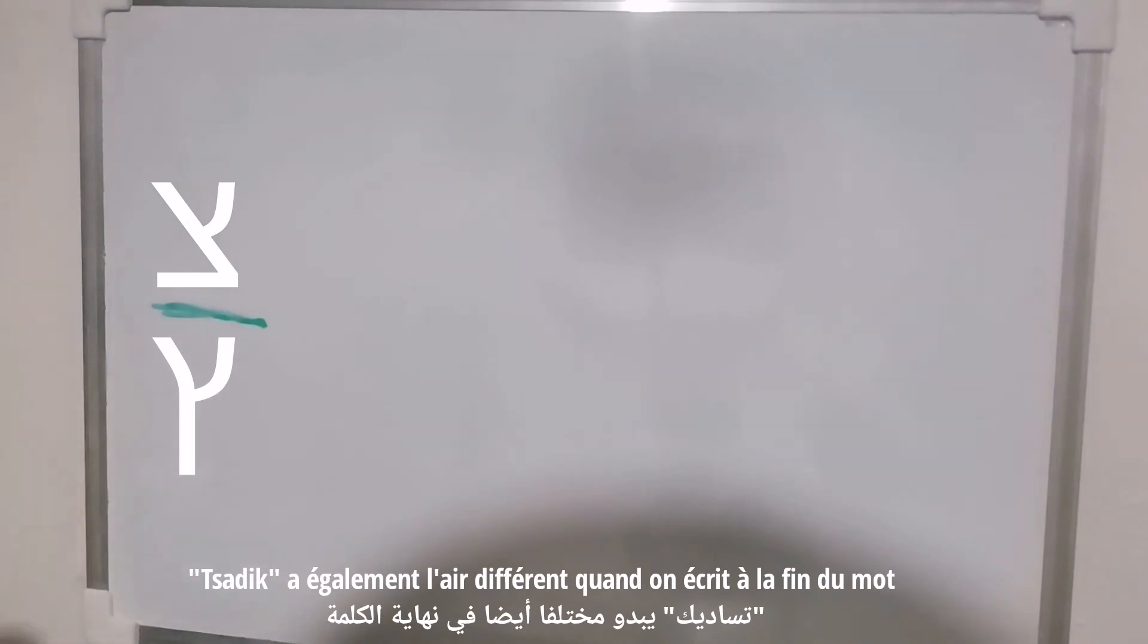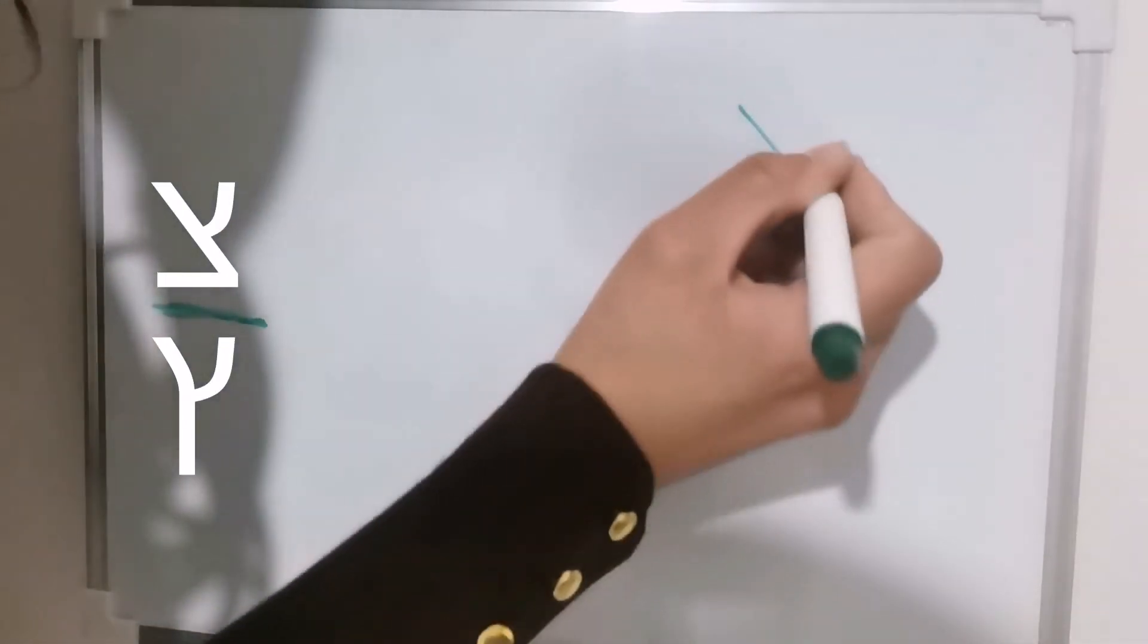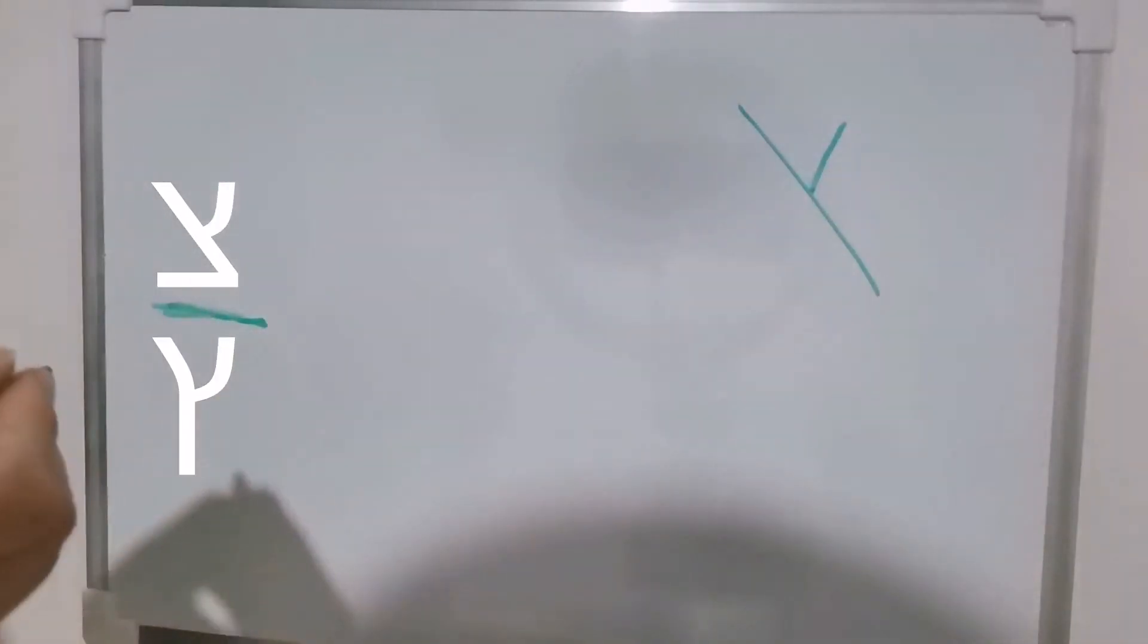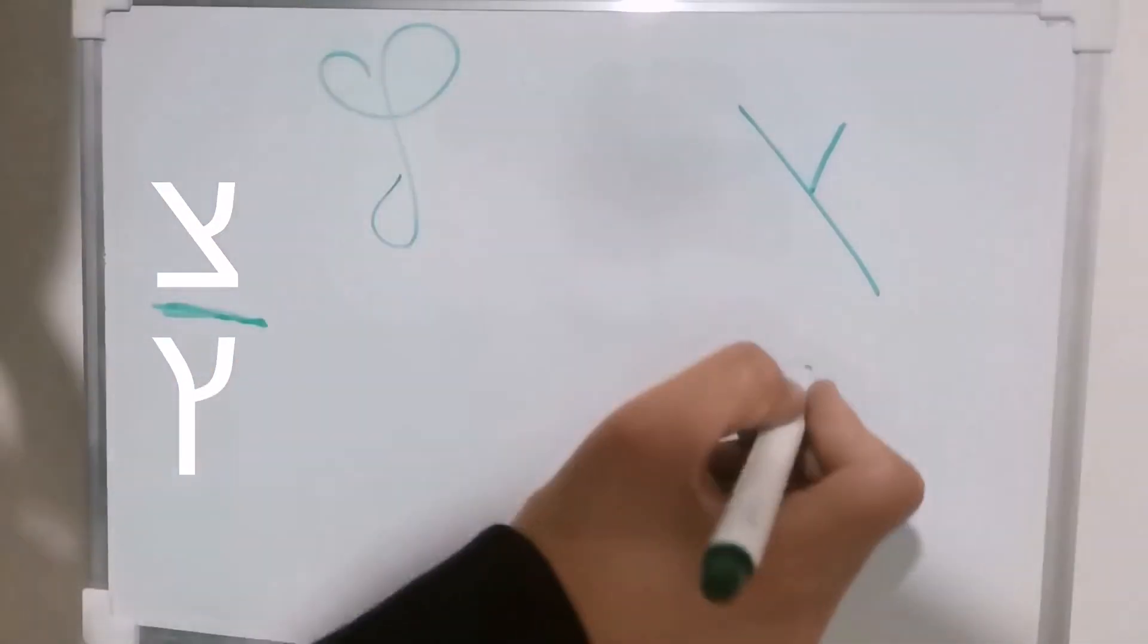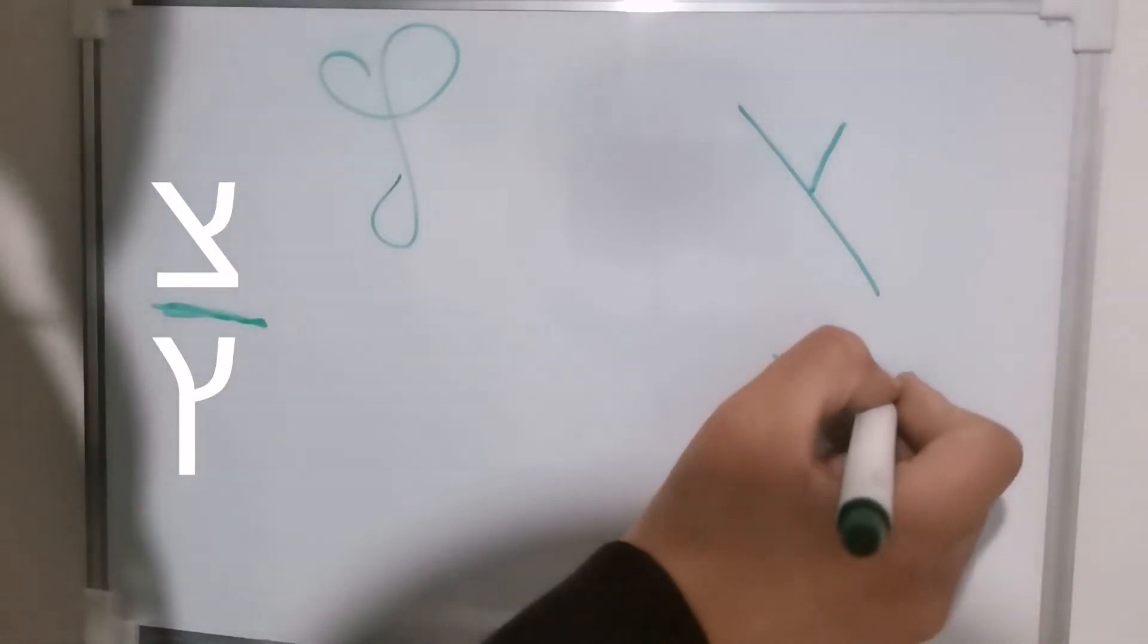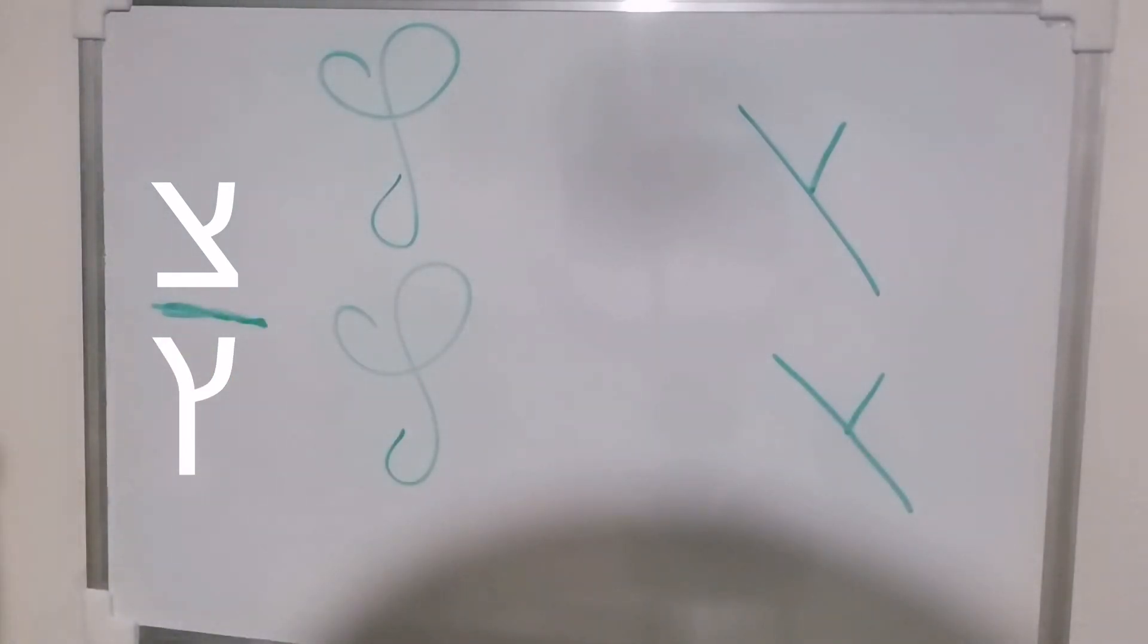Tzadik also looks different when you're writing at the end of the word. The print character is like this, and the handwriting looks like this. Let's write it again. Tzadik. And we call it Tzadik Sofit.